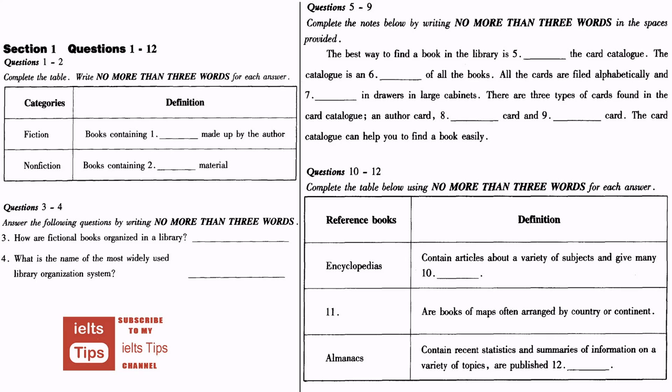Practice listening test for IELTS, version 1. Instructions: You will hear a number of different recordings and you will have to answer questions on what you hear. There will be time for you to read the instructions and questions and you will have a chance to check your work. All the recordings will be played once only. The test is in four sections. Write all your answers in the listening question booklet. At the end of the test you will be given ten minutes to transfer your answers to an answer sheet. Now turn to section 1.